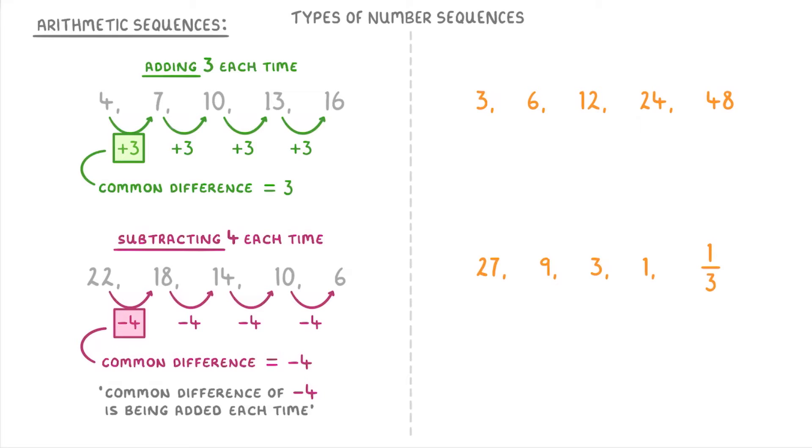Now these next two sequences on the right are what we call geometric sequences, which is where the numbers are being multiplied or divided by a certain amount each time.